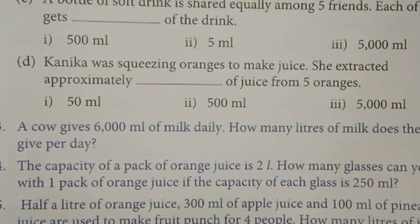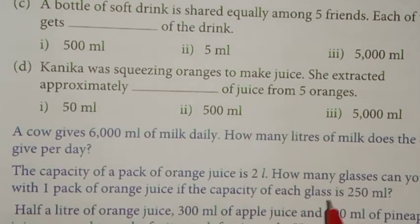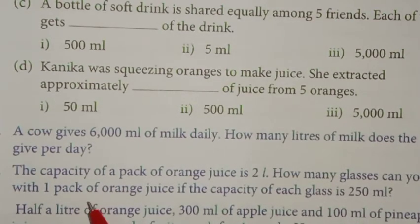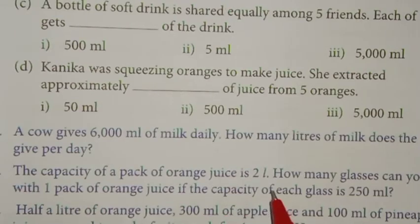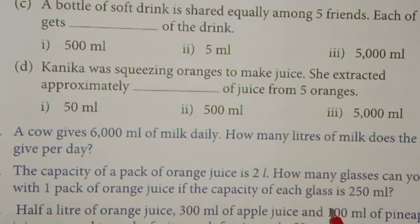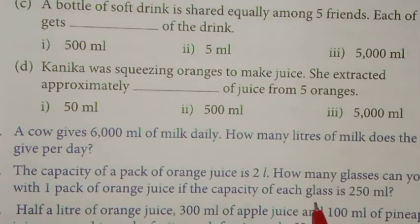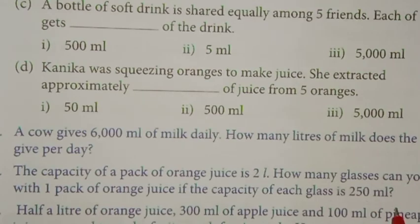Next: the capacity of a pack of orange juice is 2 liters. How many glasses can you fill with one pack of orange juice if the capacity of each glass is 250 ml? The pack is 2 liters and each glass holds 250 ml, so find out how many glasses can be filled from one pack and write the answer.